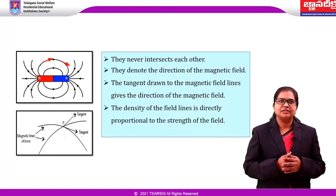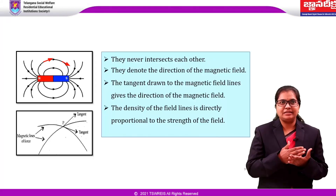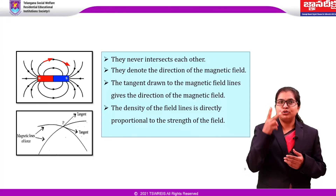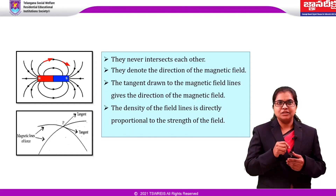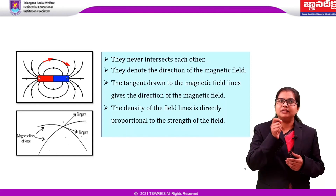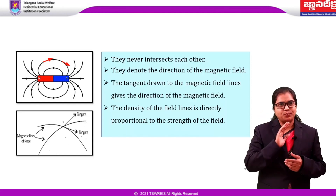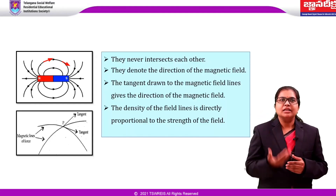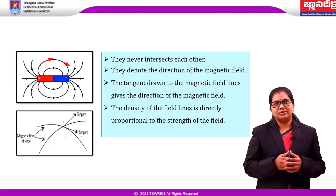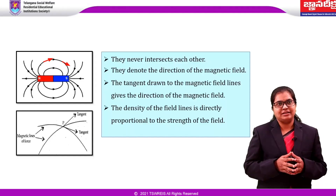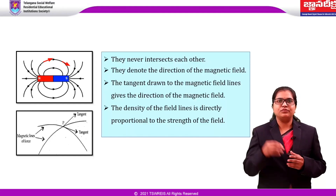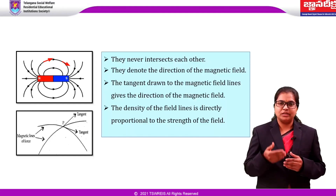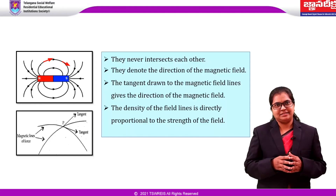One important point is that magnetic field lines never intersect each other. Why? If they intersected, we would need to draw two tangents at that particular point, meaning two different directions at that point, which is not possible. That is why they never intersect each other. The density of the field lines is directly proportional to the strength of the field. These are the properties of magnetic field lines.